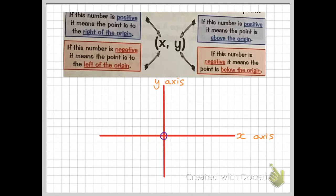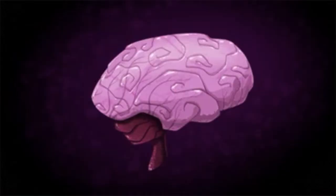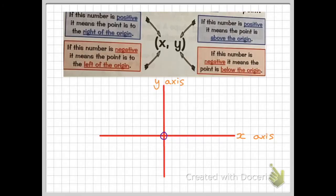We have four quadrants in coordinates. This is known as the first quadrant, here's the second quadrant, here's the third, and here's the fourth quadrant.